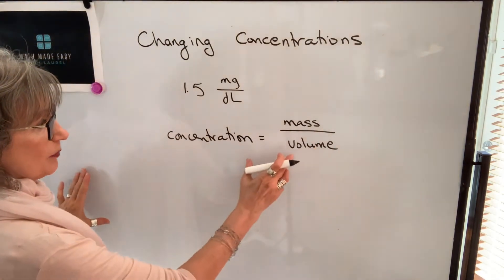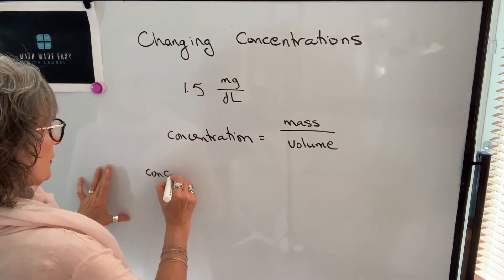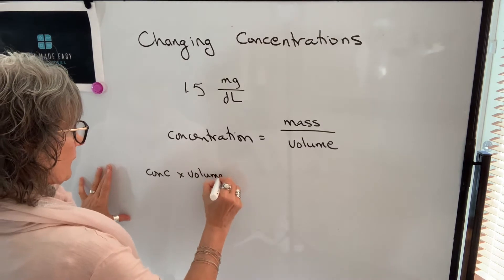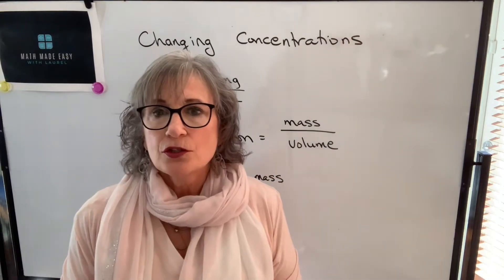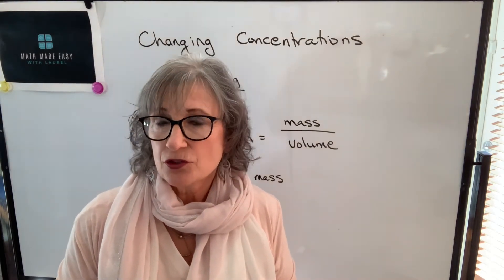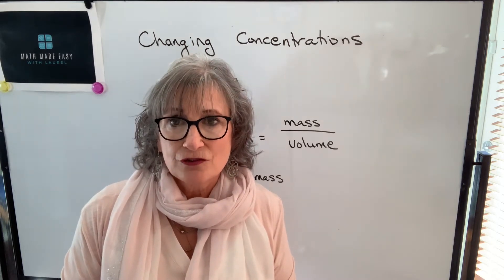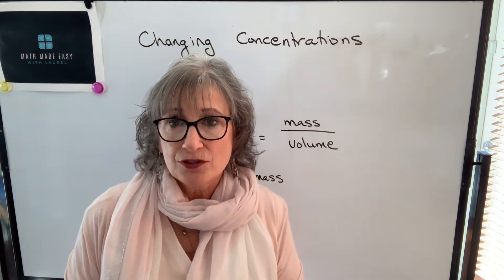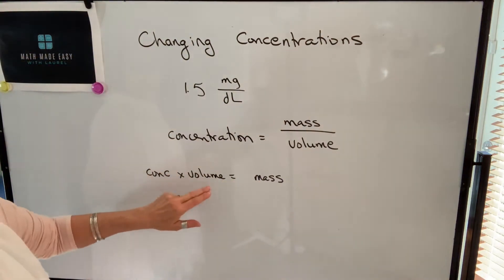When the concentration is expressed in mass per volume units, or even as a percent, we're expressing concentration as a ratio of mass of the solute per volume of the solution. If I multiply both sides by volume, I get concentration times volume equals mass. So when you take a solution and dilute it with a diluent such as water, the mass of your solute doesn't change.